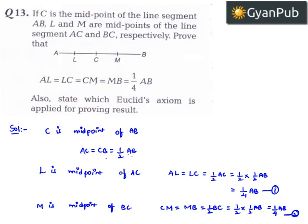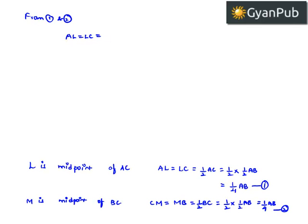From 1 and 2, we can write that AL is equal to LC is equal to CM is equal to MB, that is equal to one fourth times AB. This is the required proof.